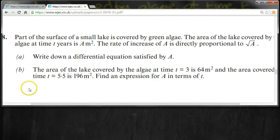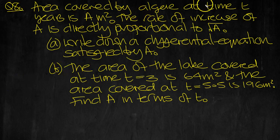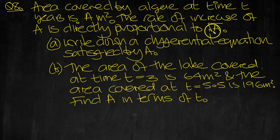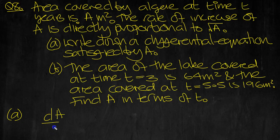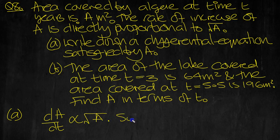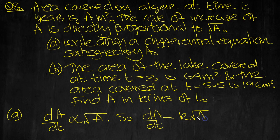OK, here's the question then. So I've got it summarized here. The rate of increase of A is directly proportional to root A. Write down the differential equation satisfied by A. The rate of increase of A, dA/dt, is directly proportional to the square root of A. So dA/dt then is equal to K multiplied by the square root of A. That's the differential equation.